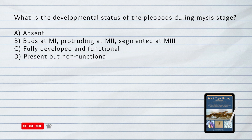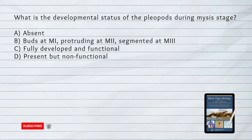What is the developmental status of the pleiopods during the MISY stage? A. Absent. B. Buds at M1, protruding at M2, segmented at M3. C. Fully developed and functional. D. Present but non-functional.